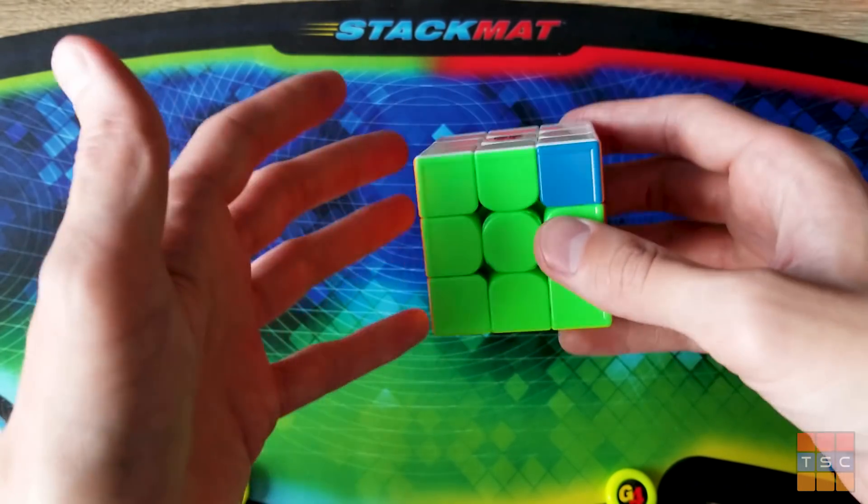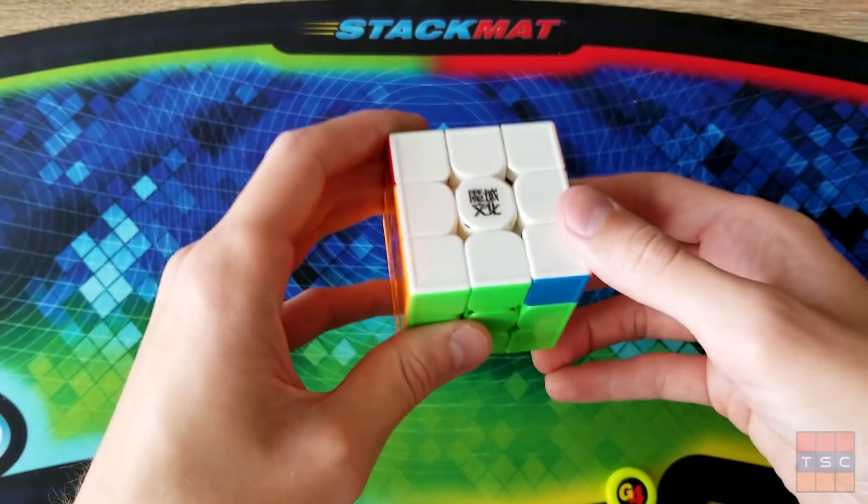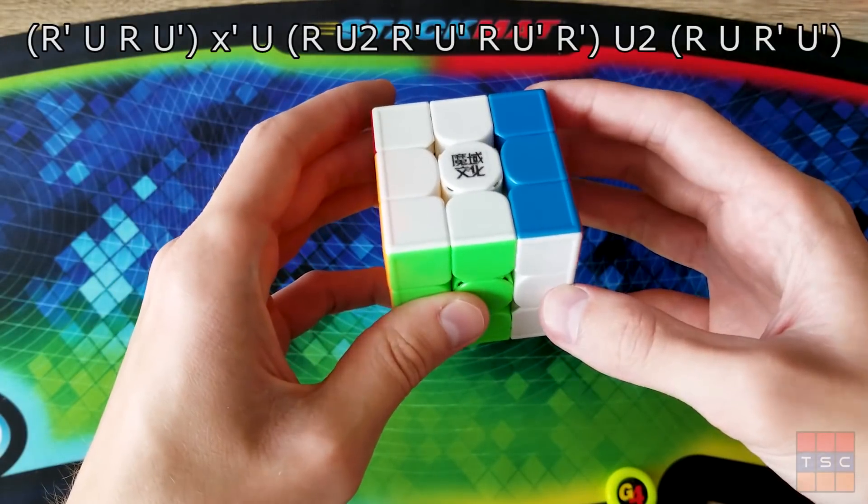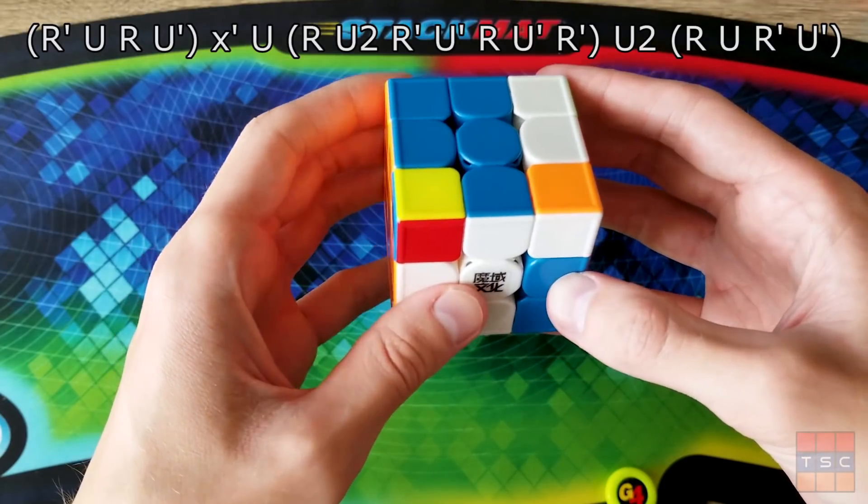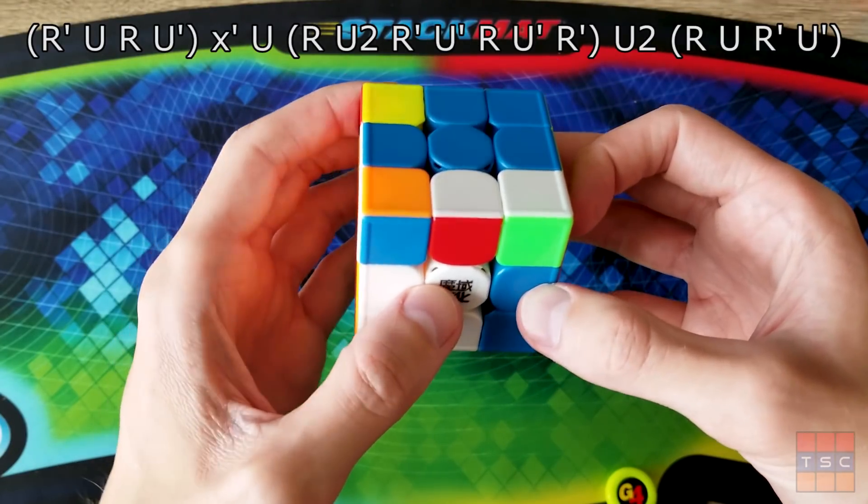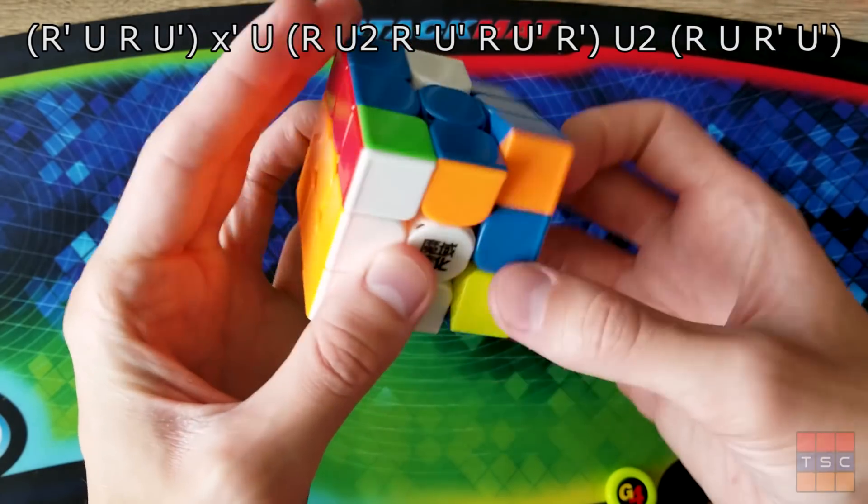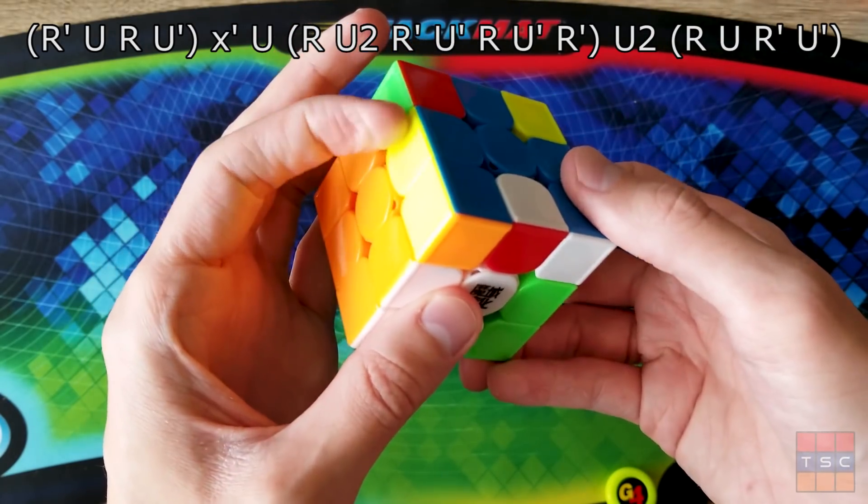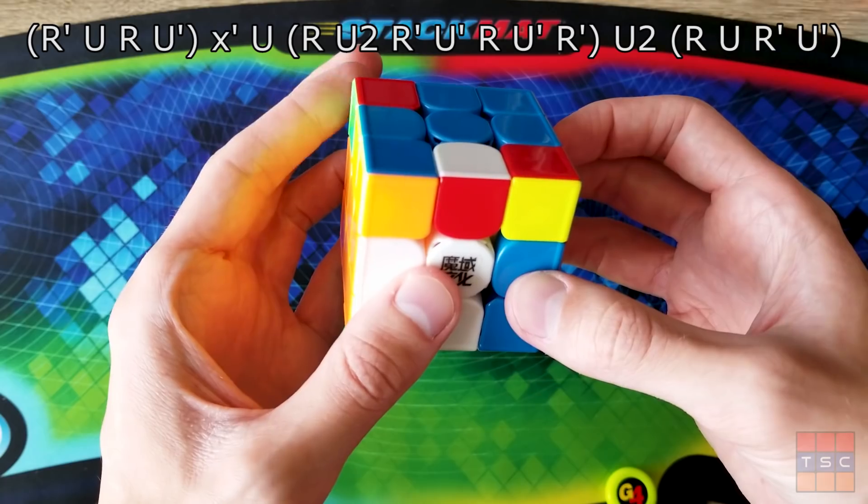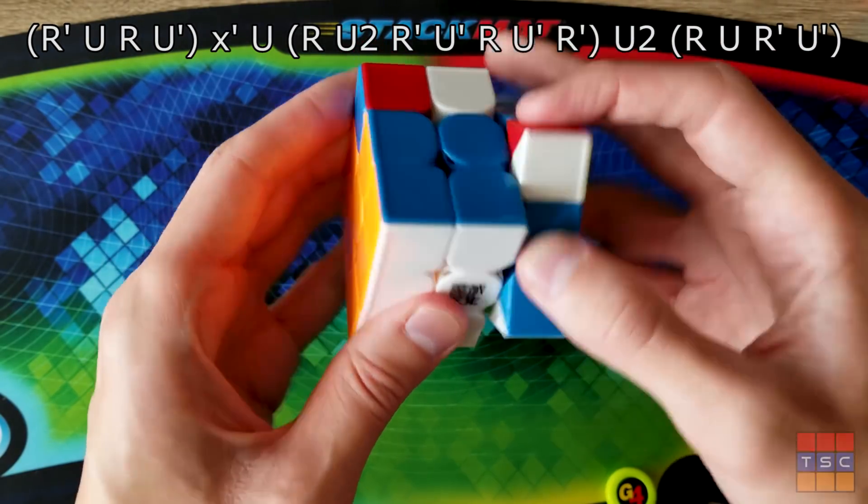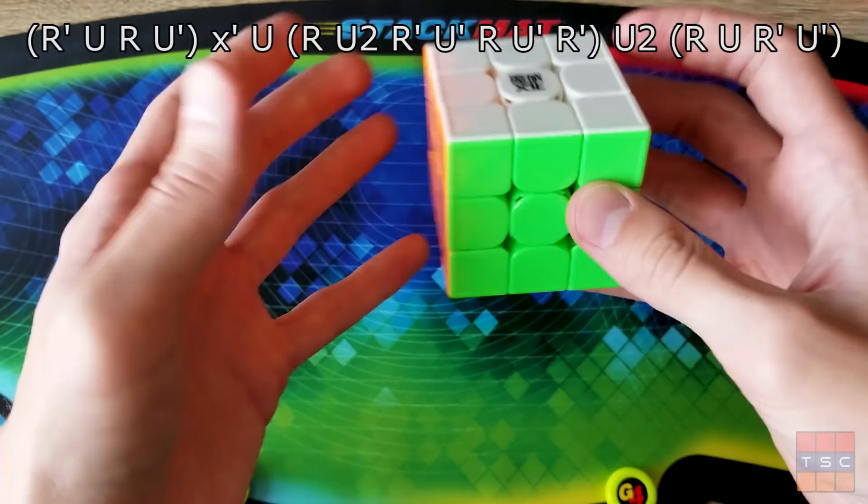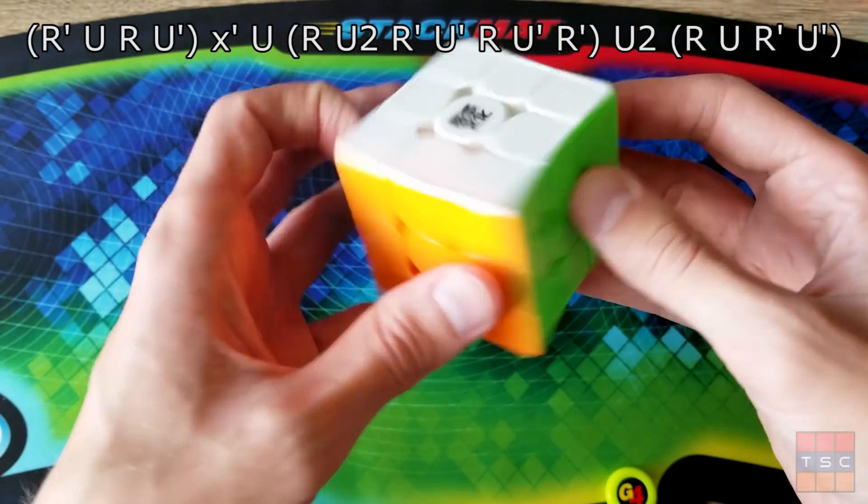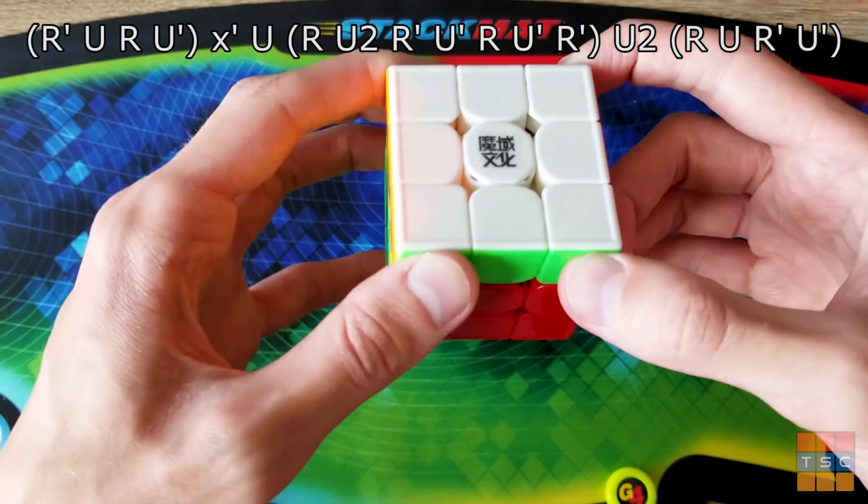Now the algorithm itself is very simple. All you're gonna do is R' U R U' a little half rotation U, then you're gonna do anti-sune. So R U2 R' U' R U' R'. Then you're gonna do another U2 flick and then finish it off with a sexy move. And just like that you have the V-perm. Now unlike the first algorithm, there's no awkward Y rotations or Y D moves.